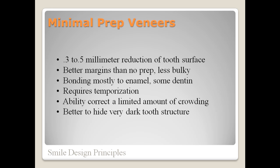Minimal prep veneers require some tooth reduction, from zero to half a millimeter, with an average of about three tenths of a millimeter. This allows you to define margins for better veneer adaptation and less bulky margins than no prep veneers. The bond is still mostly to enamel, but there may be some dentin exposed, so they usually require temporization. Since you are allowed some tooth reduction, you are better able to correct moderate amounts of crowding and mask darker tooth colors. You can also select a slightly more opaque porcelain to lighten darker shades, but this way you will lose some of the natural translucency that is so desirable in anterior aesthetic cases.